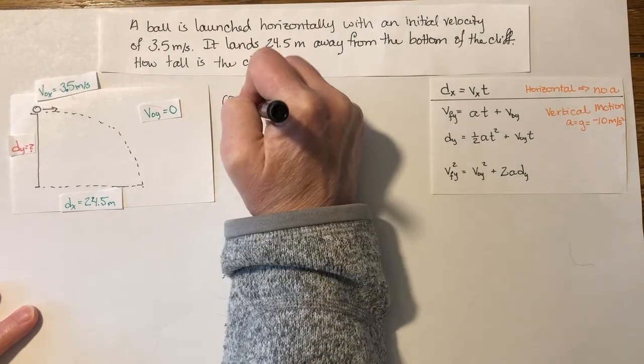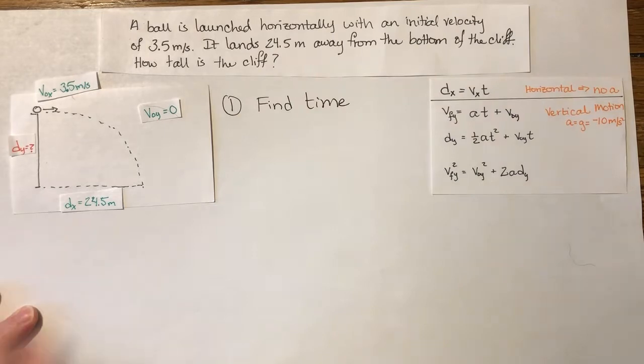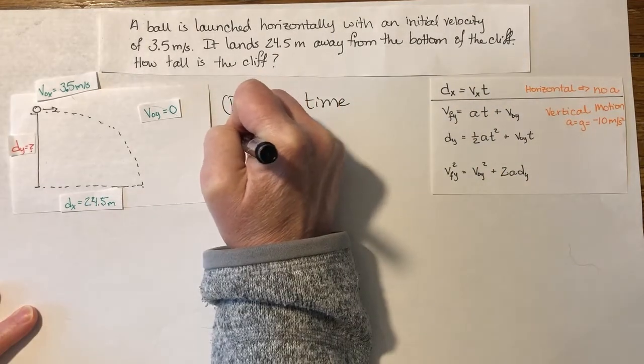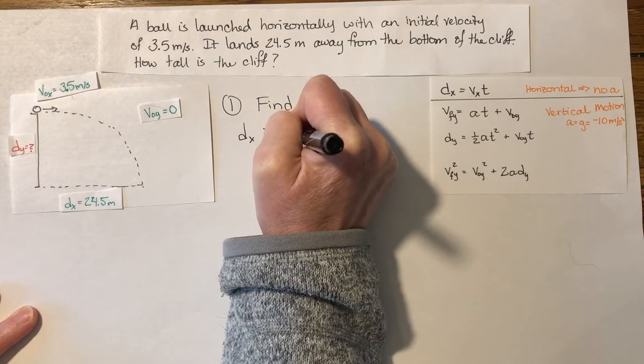So step one, find time. dx or displacement in the x direction is vx times t.